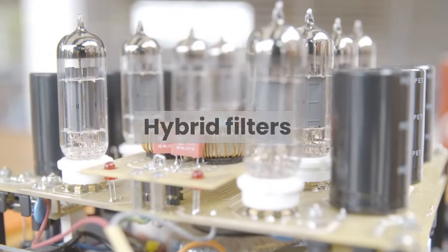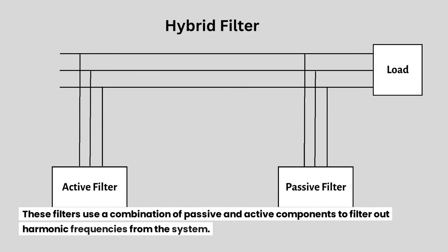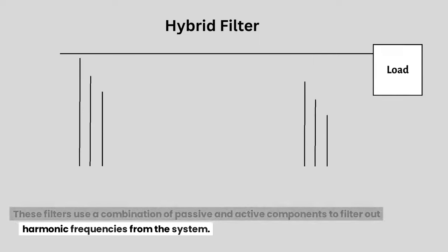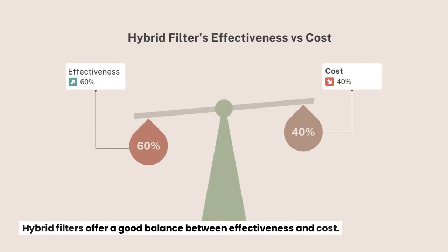Hybrid filters use a combination of passive and active components to filter out harmonic frequencies from the system. Hybrid filters offer a good balance between effectiveness and cost.